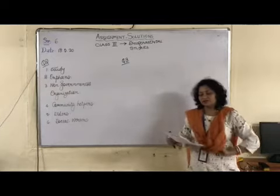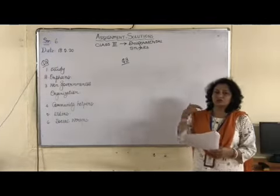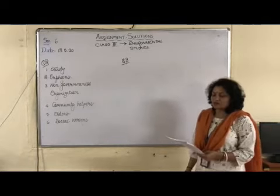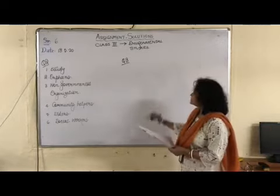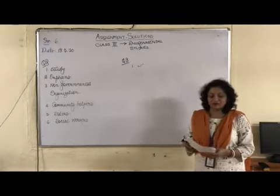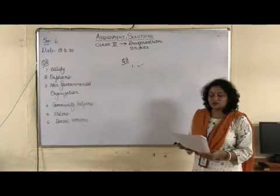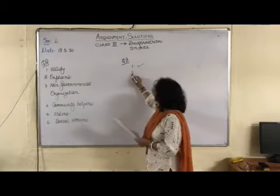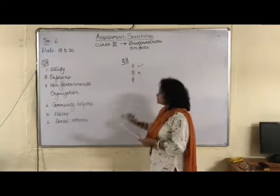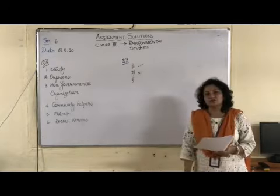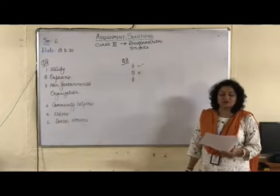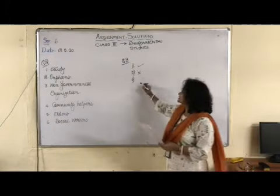We will go to question number 3, where we are supposed to put right or wrong for the sentence. Number 1: Mother looks after the needs of the family — correct. Number 2: Social workers and community workers are the same — no, they are not the same. Social workers do not charge money, but community workers charge money for their service. Number 3: Some working children work as well as study in school — yes, it is correct.